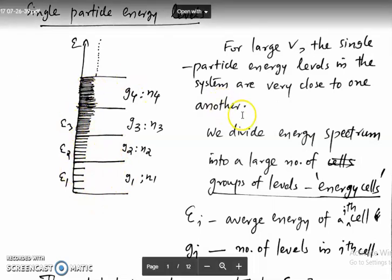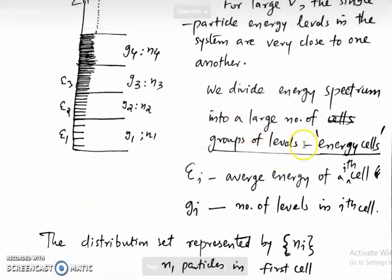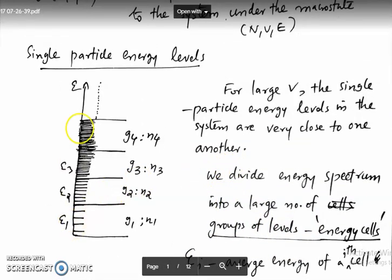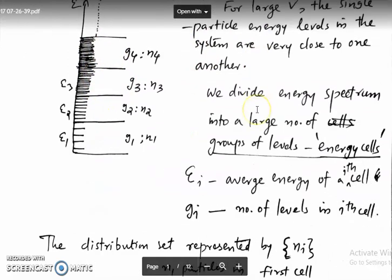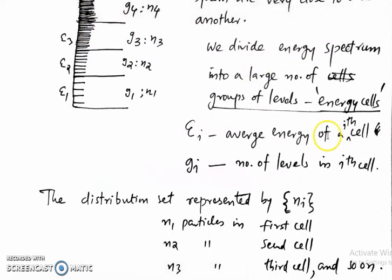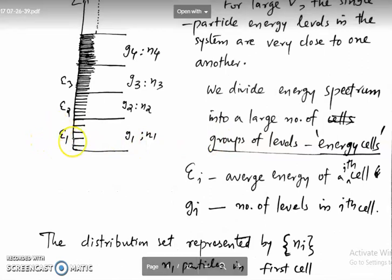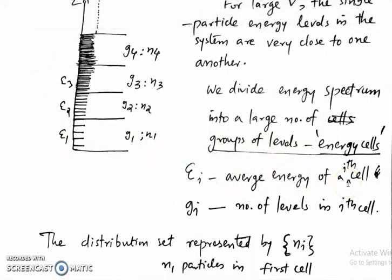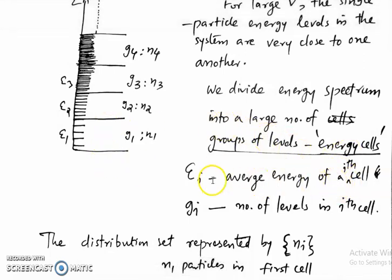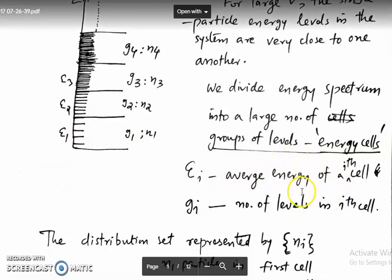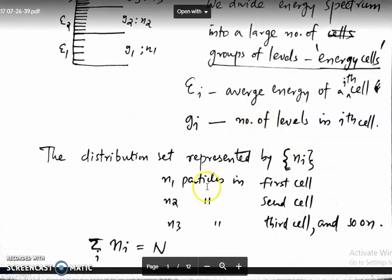These are the single particle energy levels, and we divide the energy spectrum into a large number of groups of levels. Each group of levels is called a cell. Epsilon_i is the average energy of the i-th cell, and g_i is the number of levels in the i-th cell.